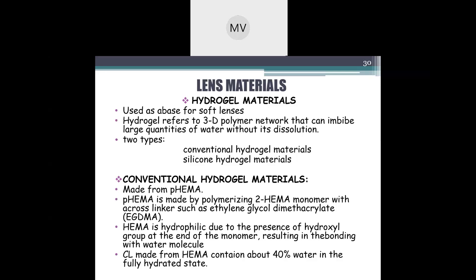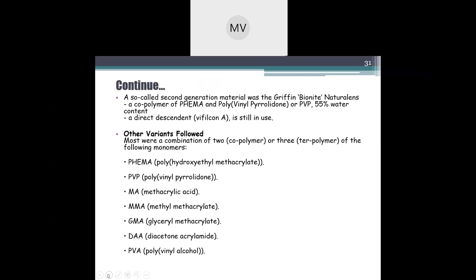The main difference between conventional hydrogel and other hydrogels is that conventional hydrogel lenses are a bit more rigid — the structural integrity of the material is comparatively higher — so the patient can use them for a longer duration. A so-called second generation material was the Griffin Bionate natural lens, a co-polymer of HEMA and polyvinyl pyrrolidone (PVP). Adding PVP increases the water content from 40% to 55%.